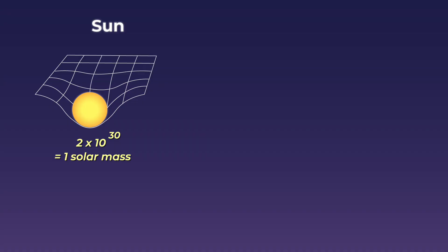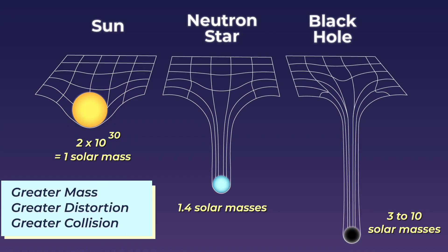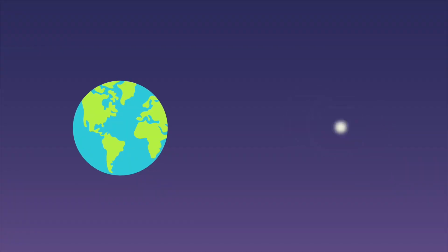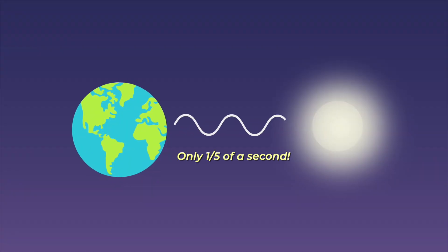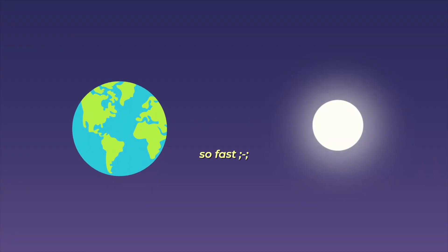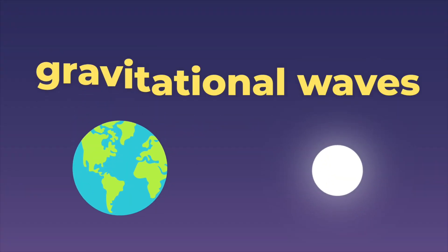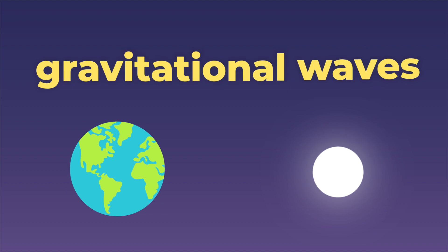When objects are heavier, the greater distortion can result in an even greater collision. And the energy from this collision is what we can observe here on Earth, in the form of gravitational waves.